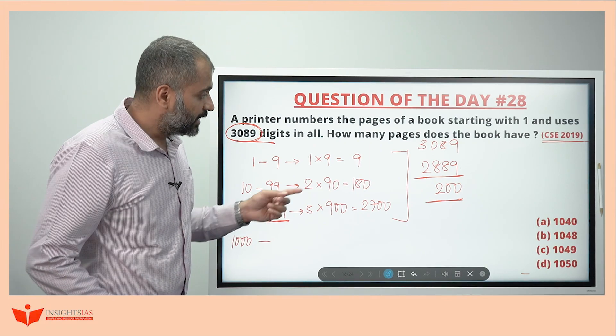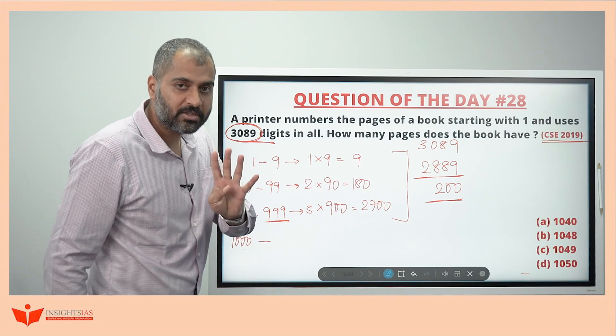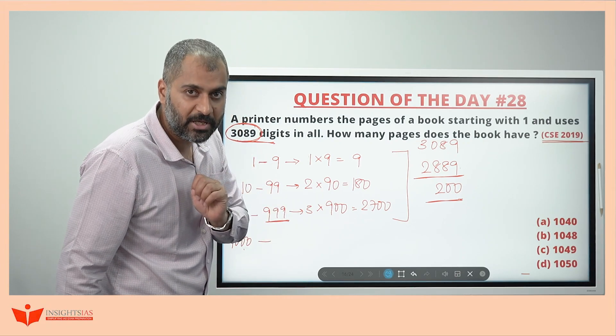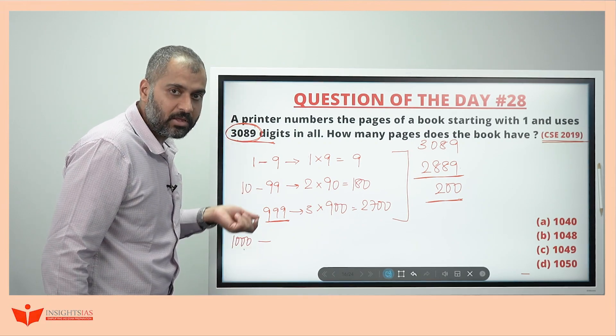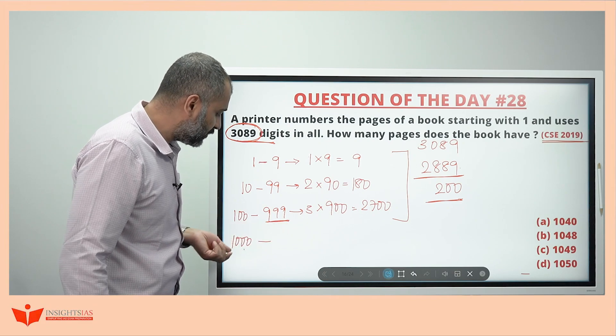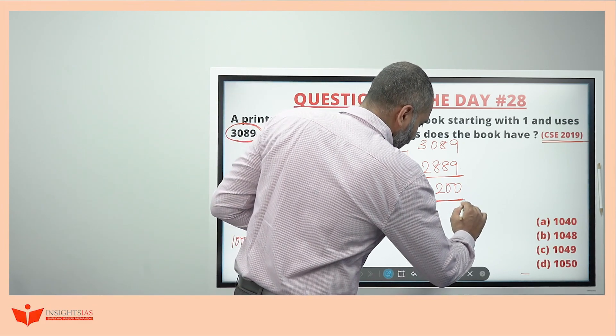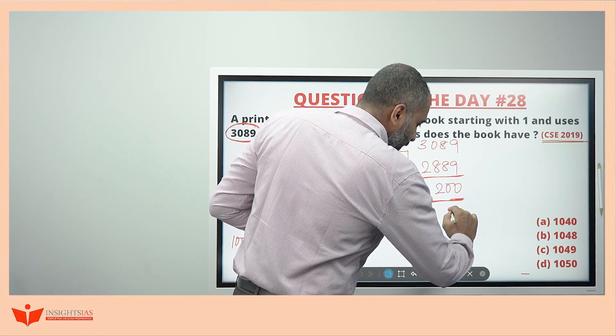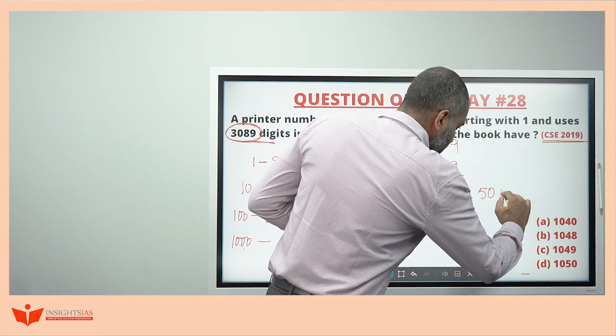200 digits has to be printed further means each page having 4 digits. Anything more than 999th page is 4 digit page. 4 digit in each page, so 1000, 1001, 1002, 1003, 1004 each will be printed with 4 digits now. Such 200 digits are printed. In each page, 4 digits means how many such? So 50 more pages has to be printed.